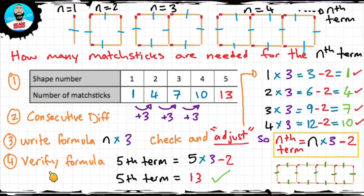Let's quickly recap. Step 1: make your table of values. Step 2: find the consecutive difference, then write a formula starting with n multiplied by the consecutive difference. Check to see if that works — if it doesn't, make an adjustment. After making that adjustment, our nth term formula is n times 3 minus 2 for this sequence. Step 4: verify your formula — I did the fifth term, but you could do the sixth or seventh. Thanks for watching. Drop a like and watch part two where I run through a test question.